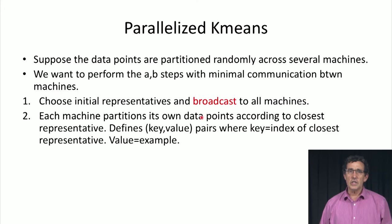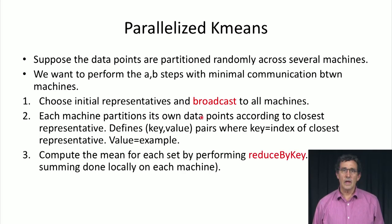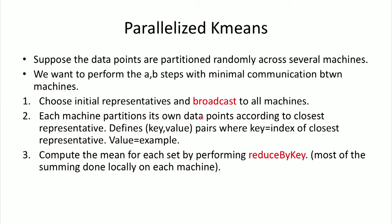Now each machine partitions its own data according to the closest representative. So then you have a key value pair, where the key is the index of the closest representative, and the value is the particular example. And then you use reduce by key to basically sum the examples from each one of the sets that are associated with the current representative.